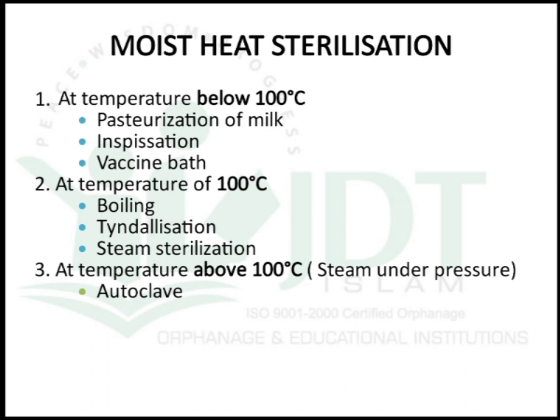Moist heat sterilization can be performed at below 100°C, at 100°C, and above 100°C. Below 100°C methods include pasteurization, inspissation, and waterbath method. At 100°C, we can perform boiling, tyndallization, and steam sterilization. Above 100°C, we use steam under pressure, or autoclave.